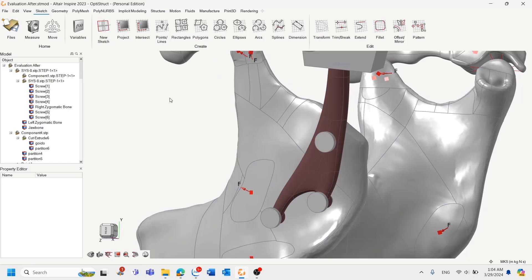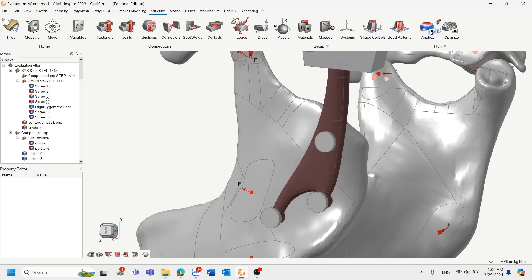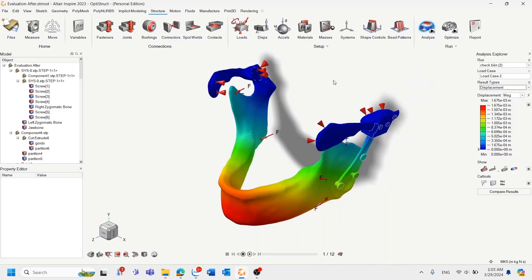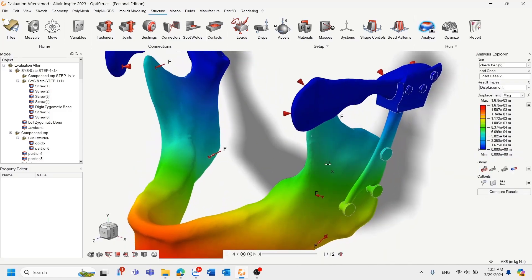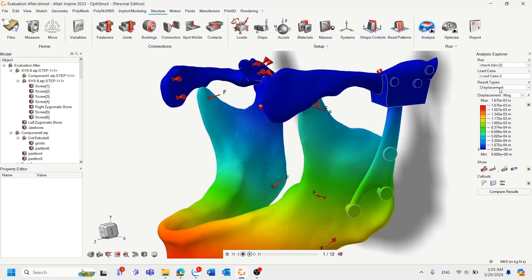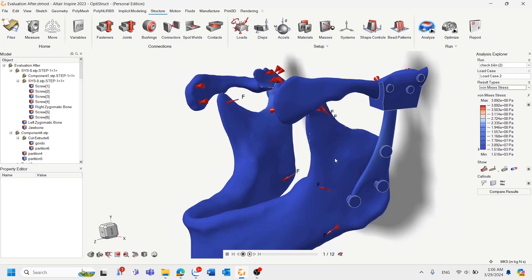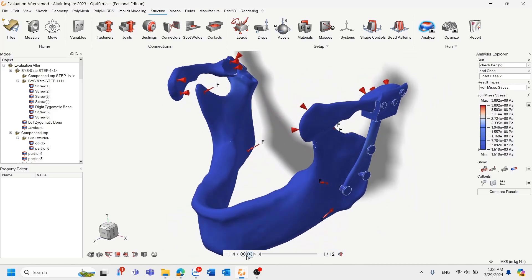And so here, we want to do the evaluation of the biomechanical property again. We'll click on the structure and click on analysis. We change the name for it and click on run. So we have the results here. So we can see that we have the same value with the displacement, the factor of safety, and the von Mises stress distribution of the new design in comparison to the old one. And we can also see the animation of it.